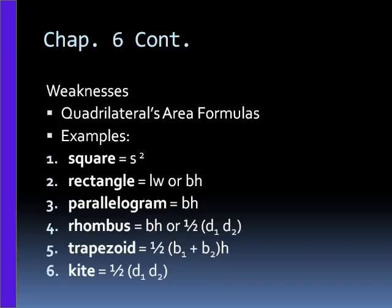After that, we have a trapezoid, which is one-half of base 1 plus base 2 times the height. And a kite, we have one-half d1, which is diagonal 1, times d2. And that's to find a kite.